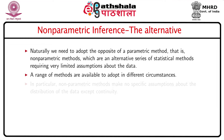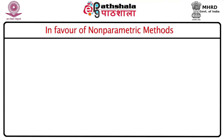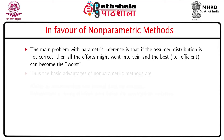Parallel to parametric inference, there are a number of methods in nonparametric inference for the same purposes but with limited assumptions. In particular, nonparametric methods make no specific assumptions about the distribution of the data except continuity. The main problem with parametric inference is that if the assumed distribution is not correct, then all efforts might go in vain and the best — that is, the most efficient — test can become the worst. If we adopt nonparametric methods for non-normal data, we can accommodate such data for analysis efficiently.